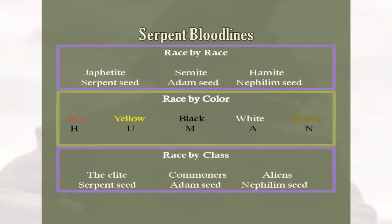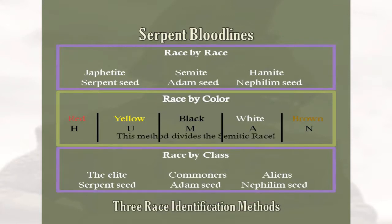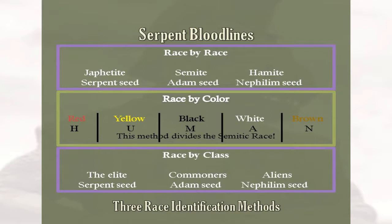First, I would like to show three ways to identify race. The top example demonstrates the race-by-race method. Wikipedia says this is the oldest method, using three generalized groups derived from Noah's sons: the Japhethite, the Semite, and the Hamite. The center method identifies race by color, which was not used until about the 18th century and only divides a very exaggerated range of Semitic colors. None of the five colors describes any race of people since racial colors vary widely — none can adequately describe any race.